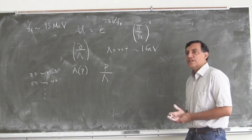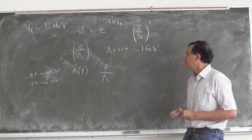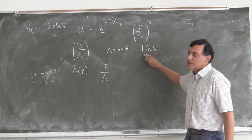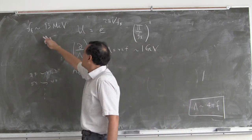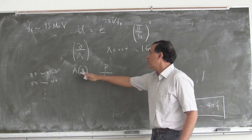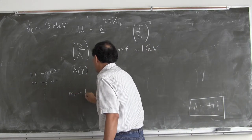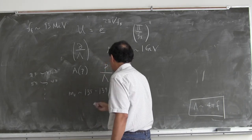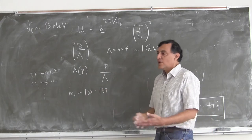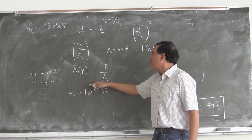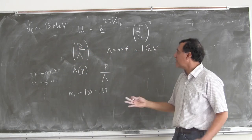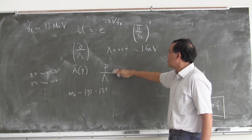This is important because if we hadn't known this and said the scale is just f_π ~ 100 MeV, we wouldn't even be able to apply chiral perturbation theory to pi-pi scattering, since the pion mass is about 135–139 MeV — already above f_π. But we are saved by this factor of 4π: it gives us a factor of 10 in energy for pions where we can do the calculation.